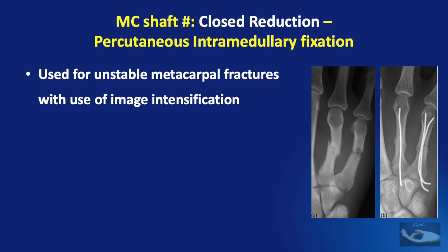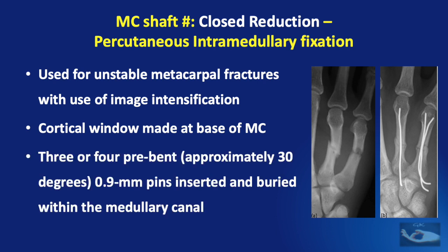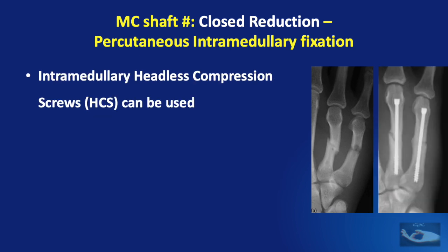Percutaneous intramedullary fixation can also be used for unstable metacarpal fractures with image intensification. First, a cortical window is made at the base of the involved metacarpal bone. Then three or four pre-bent wires of 0.9 mm diameter are inserted and buried within the medullary canal. A detailed description of this technique is available in the linked video. By the same technique, intramedullary headless compression screws can also be used.